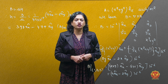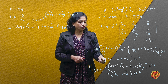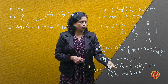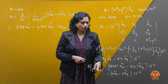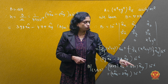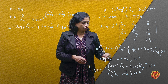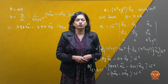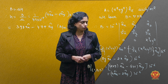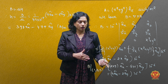Ab hume point (1, 2, 3) per B ka value find out karna hai. To y ki value 2 substitute ki to 4 ax, aur x ki value 1 substitute ki to minus 2 ay, into 10 to the power minus 6. So expression B ka hai: (4 ax minus 2 ay) × 10⁻⁶.